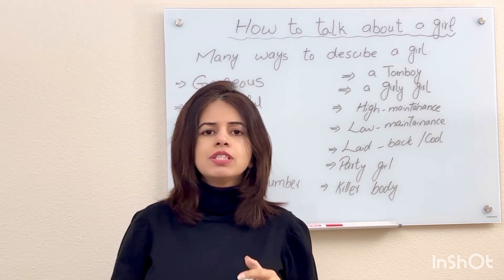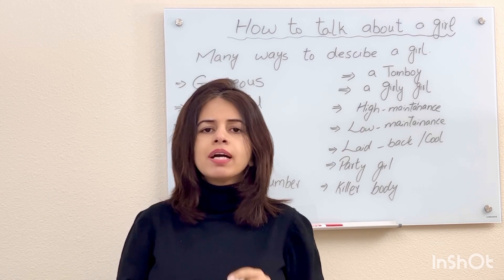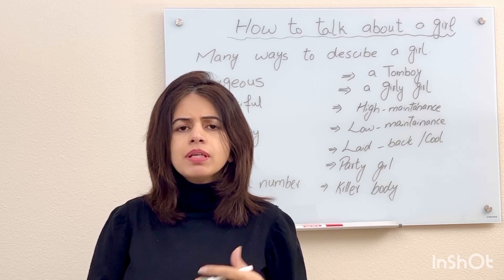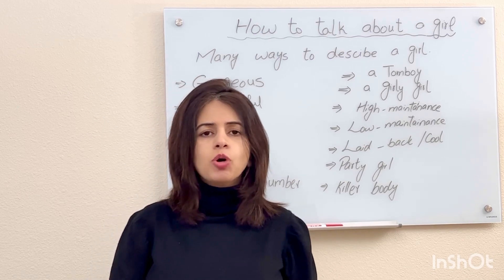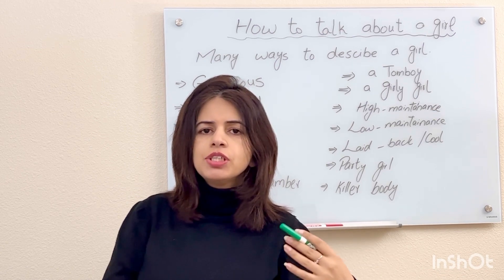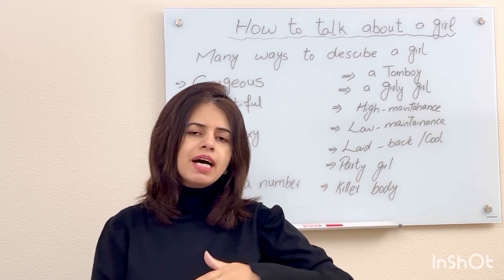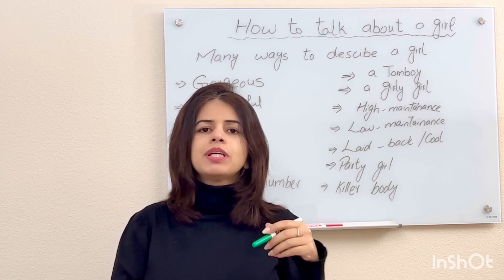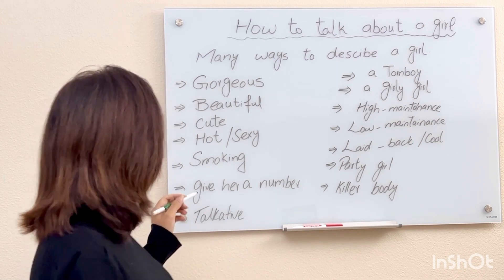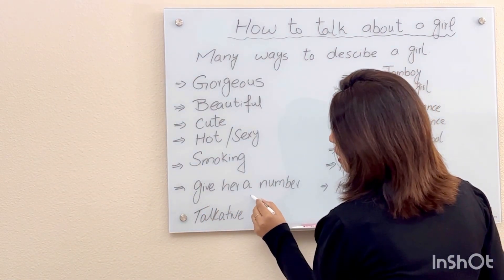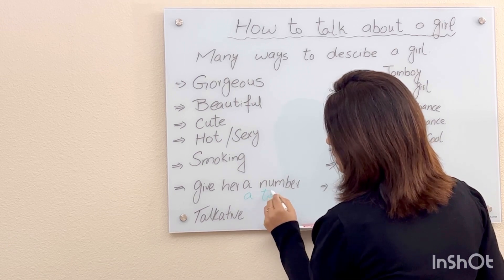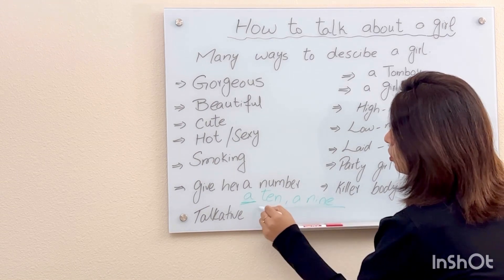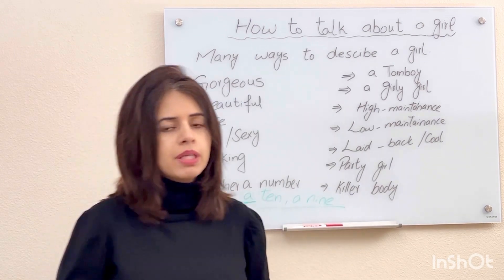You can give her a number, like she is a 10, she is a 9, she is an 8. If she is your dream girl, you will give her a high number. If you really like someone, you usually give her a 10. You have to use an article — she is a 10, she is a 9.